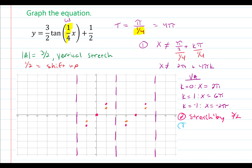Finally, I would like to go ahead and shift this up. So I'm going to shift up by one half — every point will be shifted up one half. So I'll have my first point at negative pi comma negative one, then zero comma one half, and then pi comma two. Repeating the same process for the next curve, I'll have three pi comma negative one, four pi comma one half, and then finally five pi comma two.